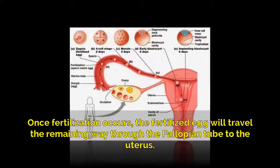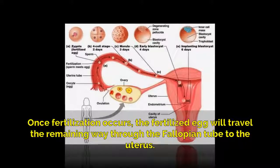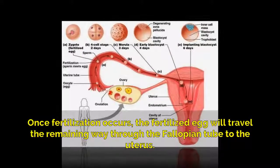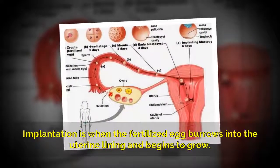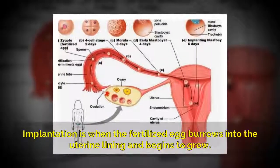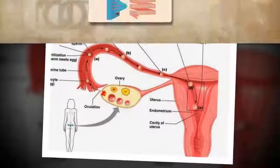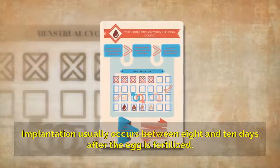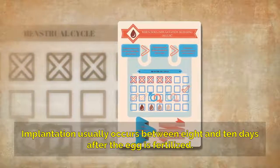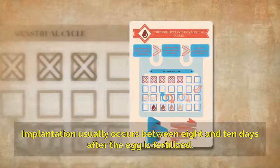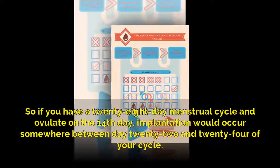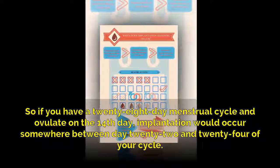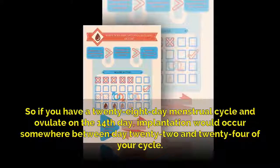Once fertilization occurs, the fertilized egg will travel the remaining way through the fallopian tube to the uterus. Implantation is when the fertilized egg burrows into the uterine lining and begins to grow. Implantation usually occurs between 8 and 10 days after the egg is fertilized. So if you have a 28-day menstrual cycle and ovulate on the 14th day, implantation would occur somewhere between day 22 and 24 of your cycle.